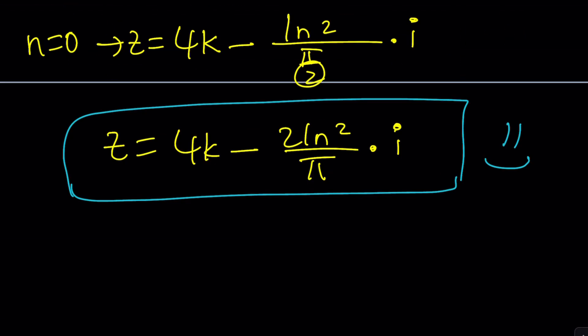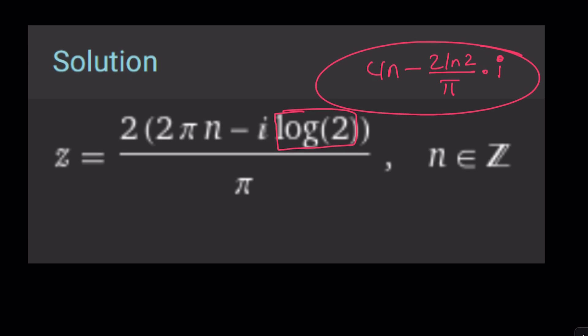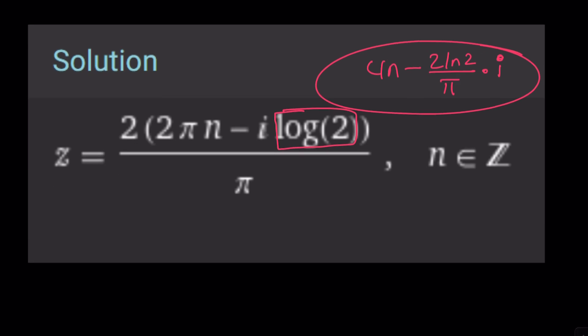Yes, they should be the same. 4k, 2 ln 2 over π, 4n minus 2 ln 2 over π, all multiplied by i. And this brings us to the end of this video.